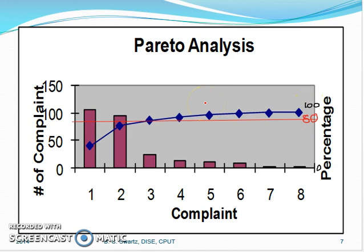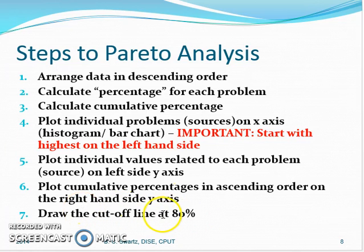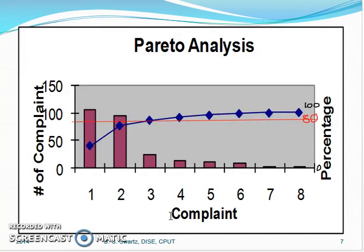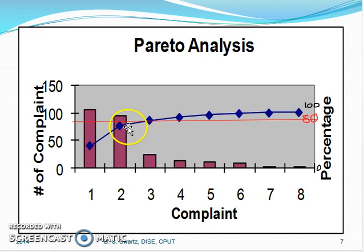Reminding myself about the steps to Pareto Analysis — we are now at step number 7, which is to draw the cut-off line at 80%. Everything under 80% is what we prioritize as the area that needs our attention. Looking back at the Pareto graph we've constructed, we can see that bar 1 and bar 2 are under the 80% cut-off line, and those are the two focus areas we are going to look at in order to solve the problems we want to address.